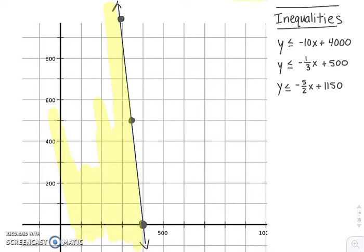And then we're going to graph the second inequality. So the second inequality, we can graph that because the y-intercept is 500. And the slope is down 1 over 3. And it is equal to, so it too will be a solid line. And it is less than also, so we will shade below.